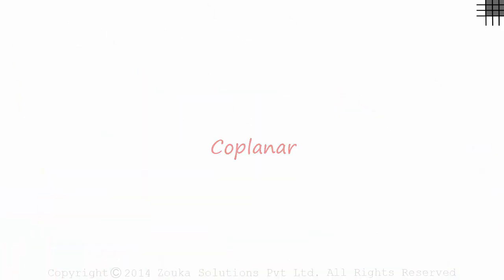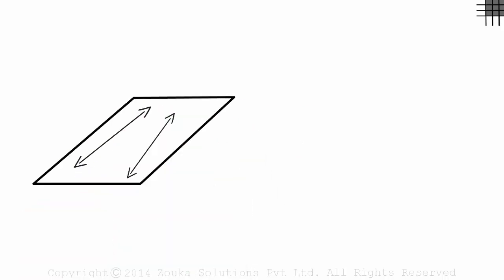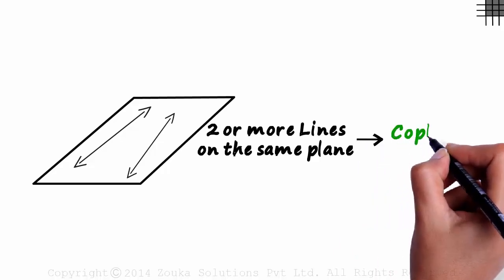So when are two or more lines coplanar? Easy! If the lines lie on one plane, they are coplanar. Two or more lines lying on the same plane are called coplanar lines.